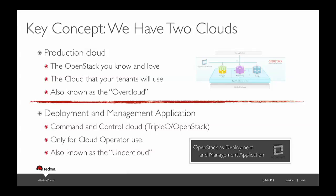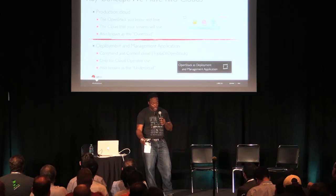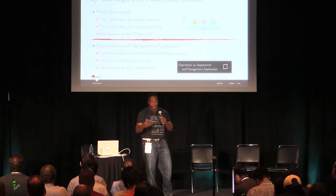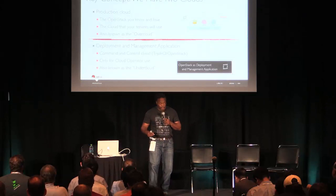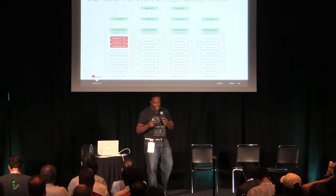The bottom cloud is what we call the deployment and management application — the command and control cloud — the one that only the operator will see. Everything in that box is OpenStack: Horizon, Glance, Nova, et cetera. From an engineering point of view, we call this the undercloud. So let's walk through the deployment process.